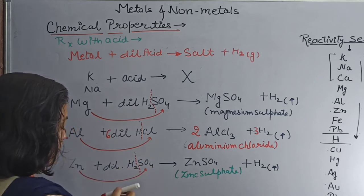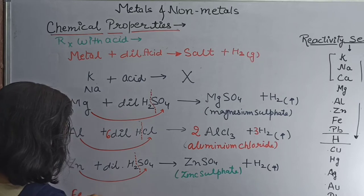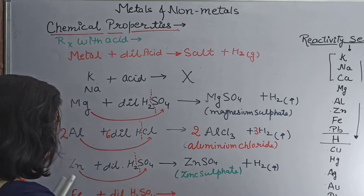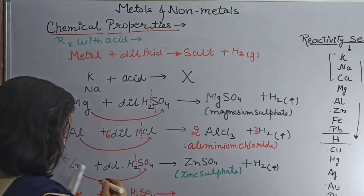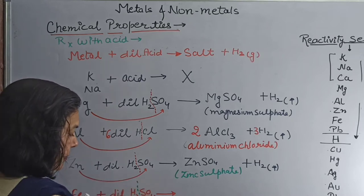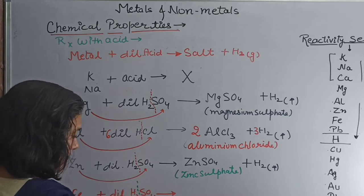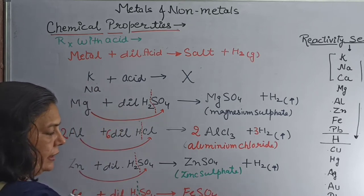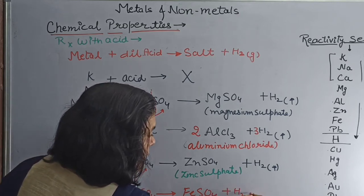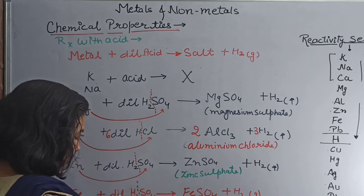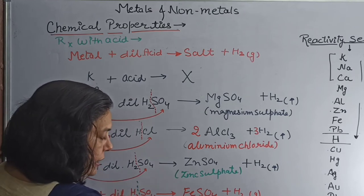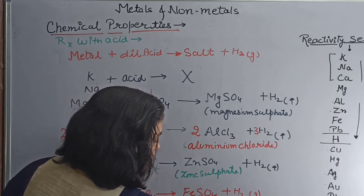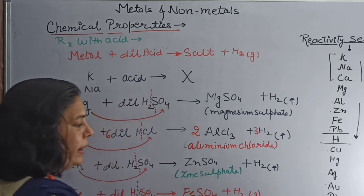When iron reacts with sulfuric acid, follow the same pattern — divide acid into two parts and add metal with the second part. There is formation of ferrous sulfate (FeSO4) and hydrogen gas is evolved. The product is ferrous sulfate — not ferric sulfate — because the valency of iron is 2 and sulfate is also 2.